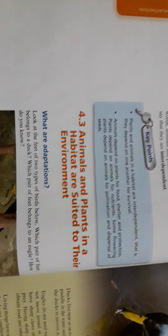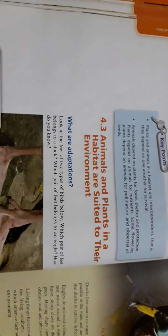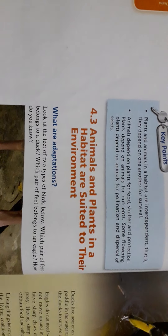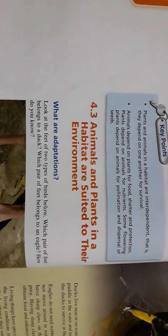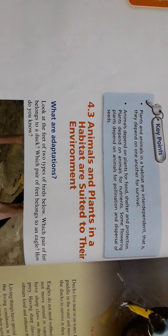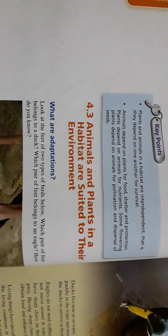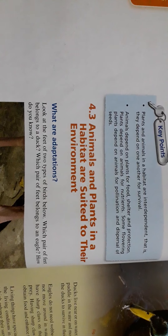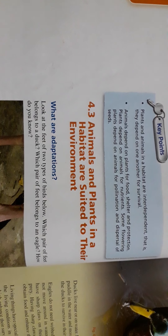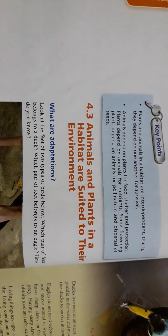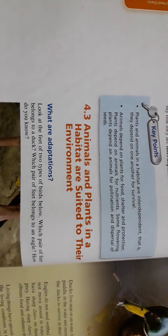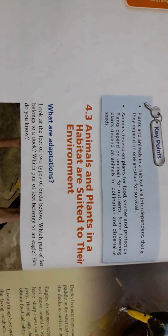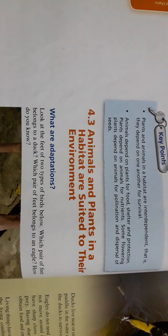Then they can survive in that environment. For example, take a camel. A camel can survive in a desert but a tiger cannot. Why? Because camels have a hump on their back. They can store food and water for several days. You know that the desert has very low resources. So camels can survive without food and water for several days in the desert.